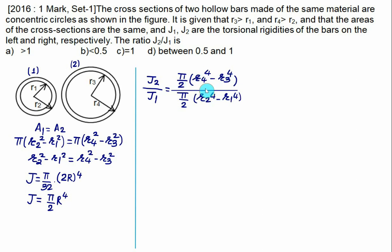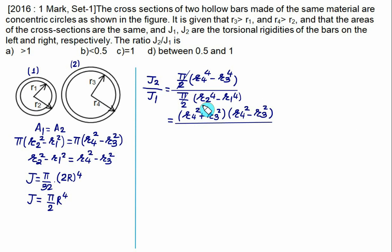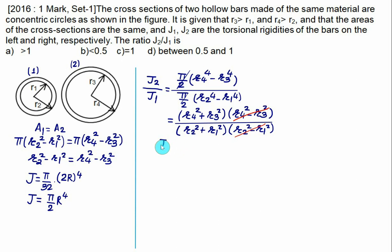The numerator becomes (r4² + r3²)(r4² − r3²) and the denominator becomes (r2² + r1²)(r2² − r1²). Since A1 = A2, the terms (r4² − r3²) and (r2² − r1²) cancel. Because r4 > r2 and r3 > r1, the numerator (r4² + r3²) is greater than the denominator (r2² + r1²), so J2/J1 is greater than 1. Choice A is correct.